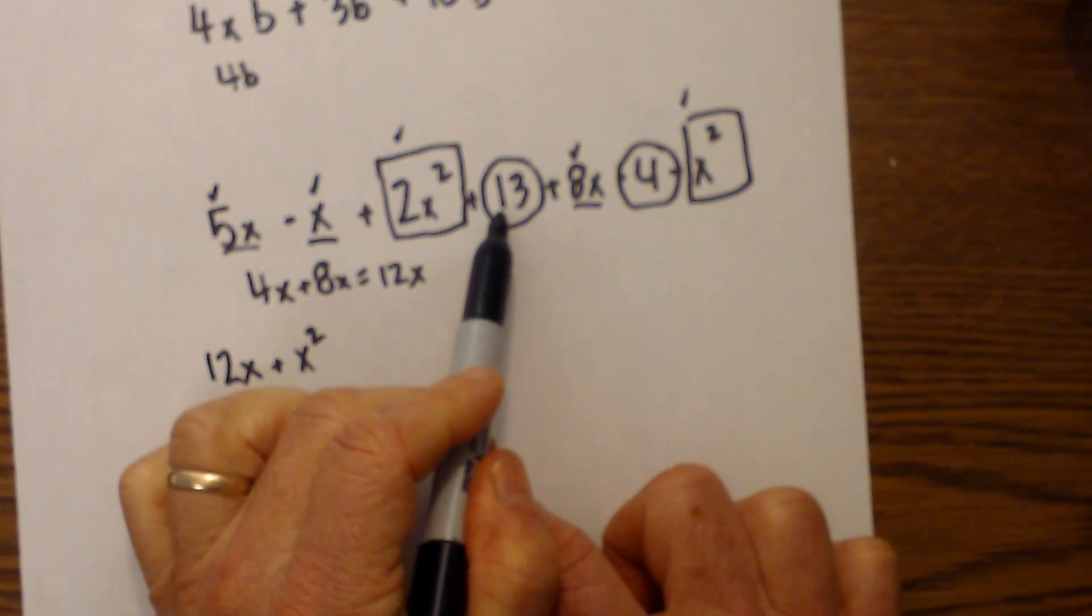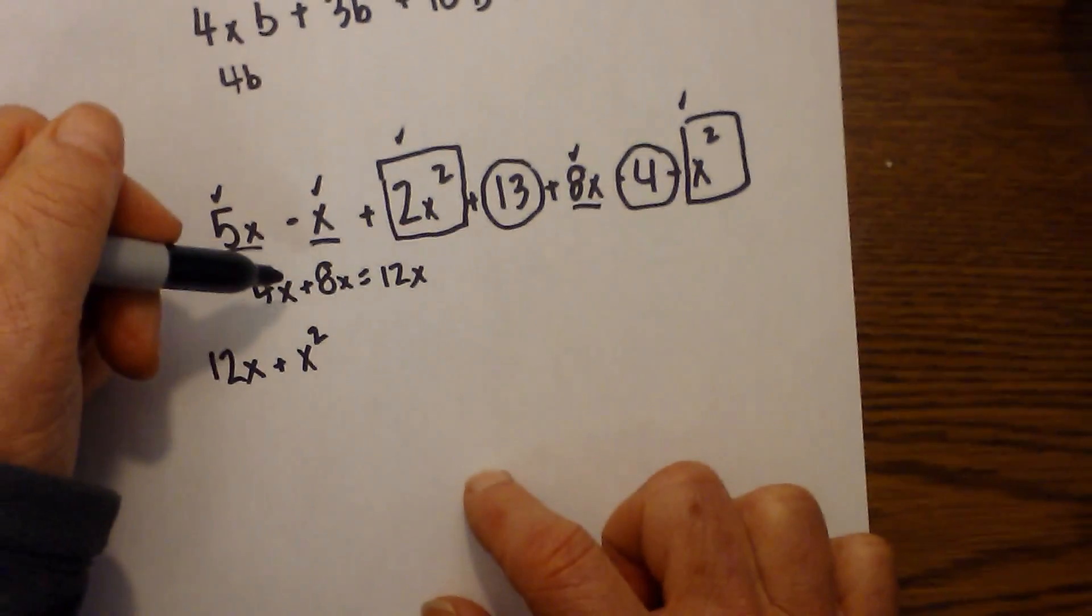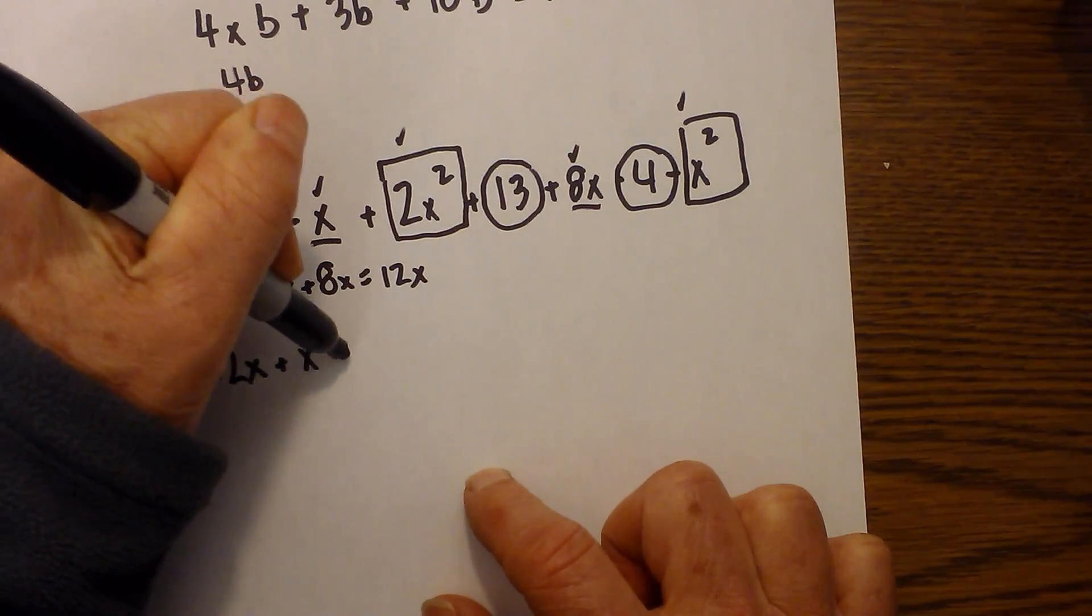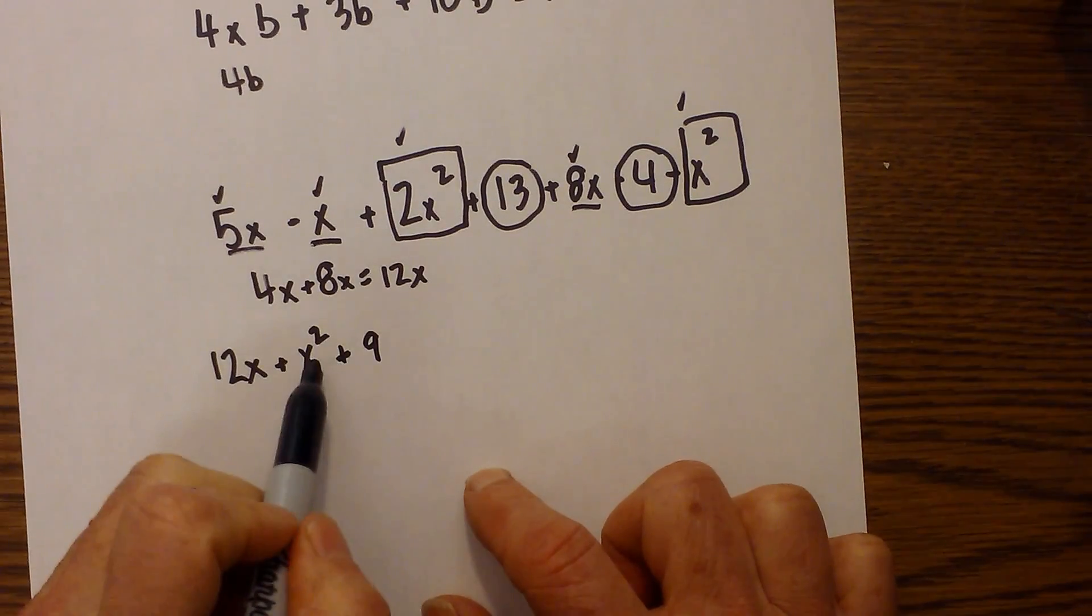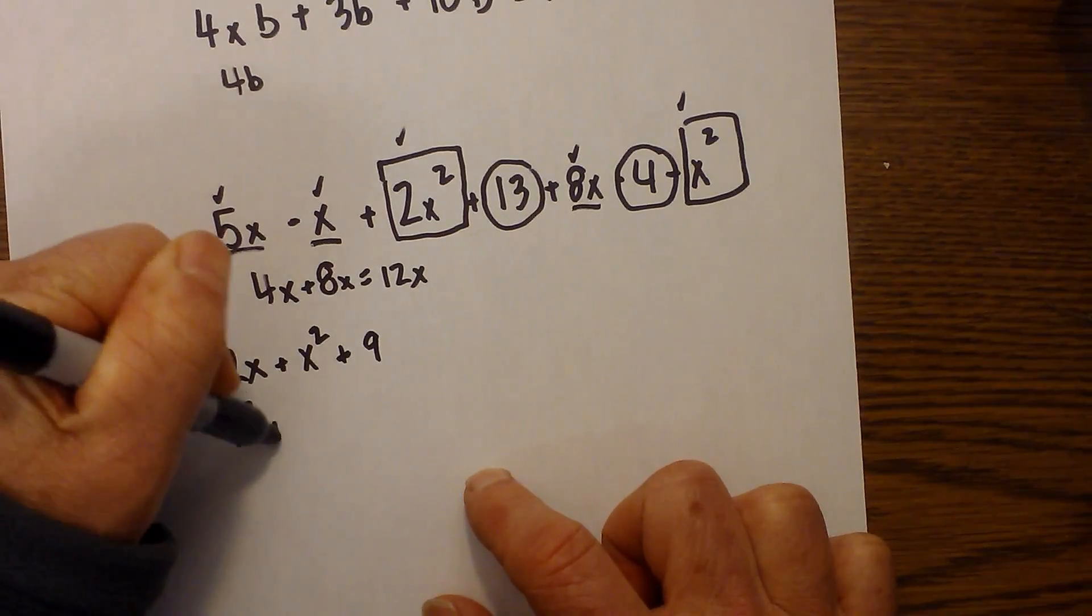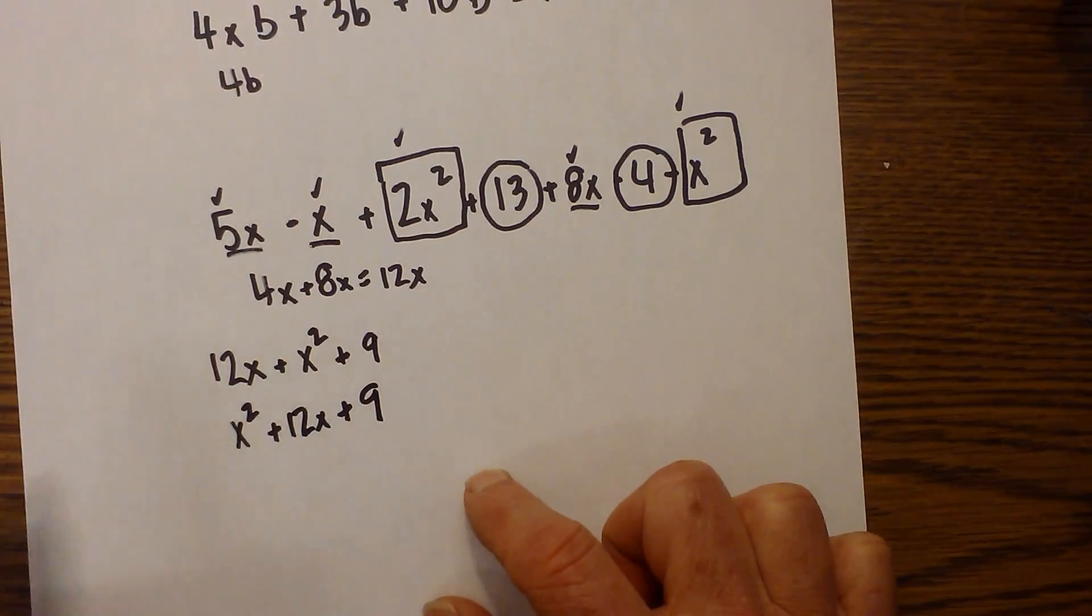And then I'll put a check by them to make sure we've done that. And then all we have is we have 13 and that was a minus 4. So 13 minus 4 becomes a positive 9. Okay. So then I will just rewrite this. I will put the x squared first plus 12x plus 9. And there we go.